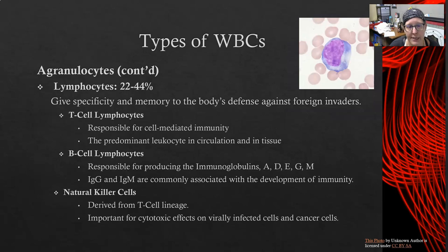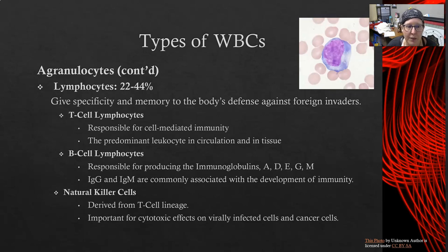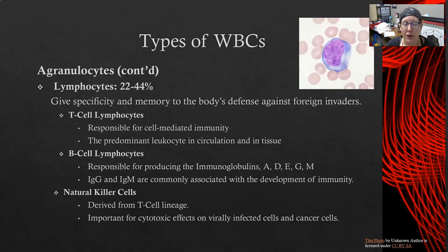Lymphocytes are the next most abundant white cell after neutrophils, with 22 to 44 percent of white cells in circulation. They give specificity and memory to the body's defense against foreign invaders, which is why they can persist for years or even decades. T-cell lymphocytes perform cell-mediated immunity — they look for body cells that are either cancerous or infected with viruses and destroy them. When you see a lymphocyte on a blood smear, it is more likely to be a T-cell.